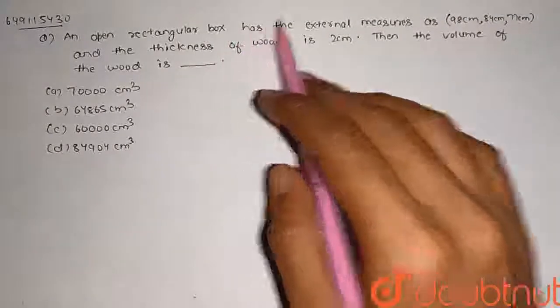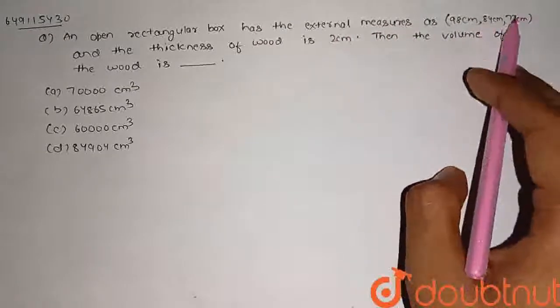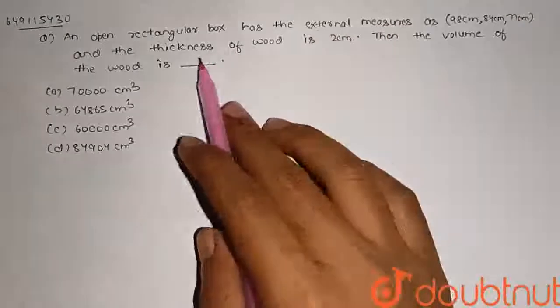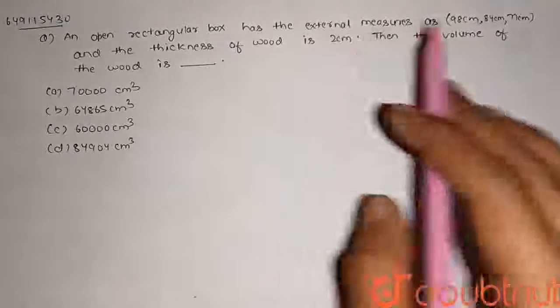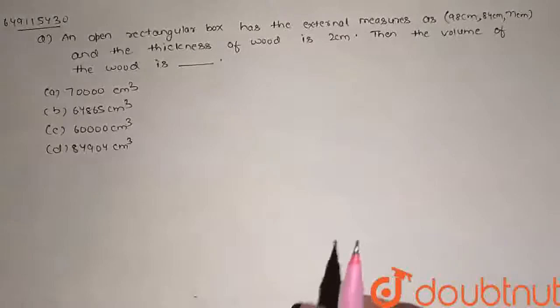An open rectangular box has the external measures as 98cm, 84cm, 77cm and the thickness of the wood is 2cm. Then find the volume of wood. There are 4 options given. Choose which is correct.